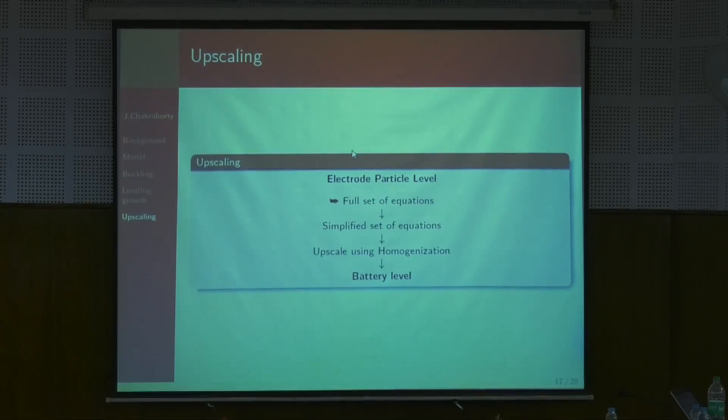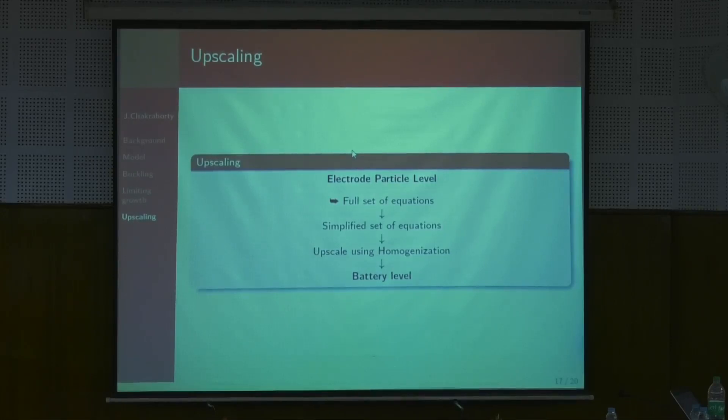Everywhere I present, I present this upscaling question hoping somebody will tell me something informative. I can use homogenization techniques to take information from the particle level up to the whole electrode level. But I cheat a little: when I simplify the full set of equations, it makes the physical model no longer representative of silicon — it becomes a good model for carbon, which does not expand so much volumetrically. It is no longer a good model for silicon. So my question is: if you know how to upscale using asymptotic homogenization but incorporating large strains, or if you have a colleague who is an expert in this, please tell me — I don't know how to do this. This is a rather important open question in mathematical modeling.